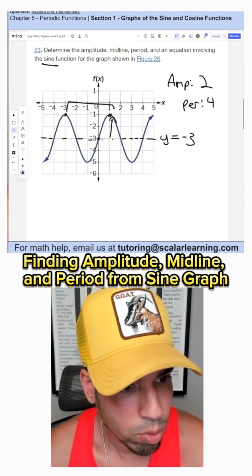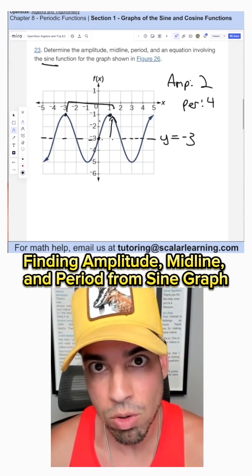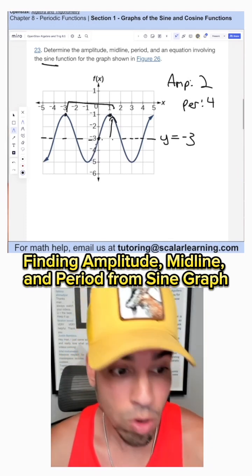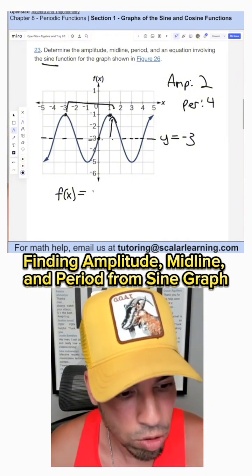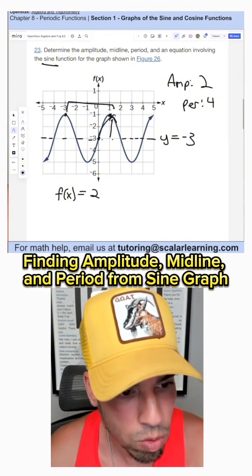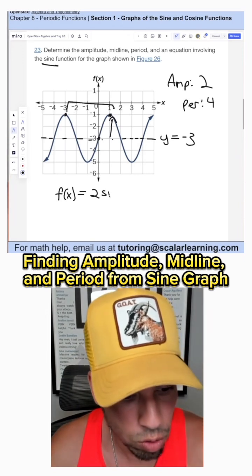And the cool thing about the starting point on the y-axis is that it's right in the center. So this is your typical sine function, meaning there's no phase shift involved. Let's put it together. We start with the amplitude of two that goes right at the beginning. Since it's going up to the right, we don't need a negation. So it's just two sine.